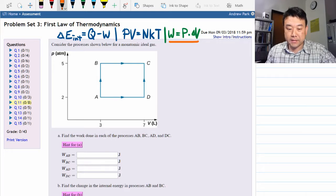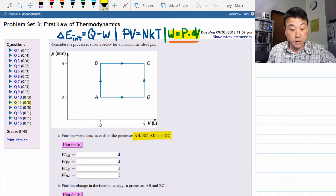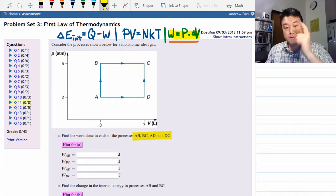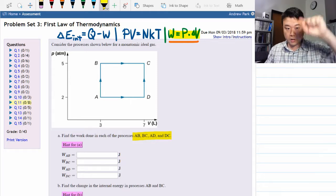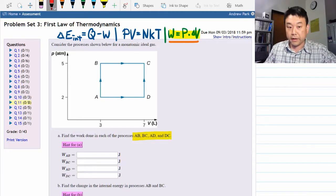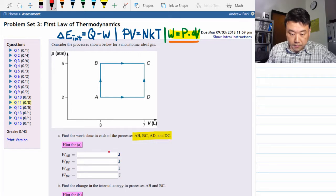So it says find the work done in each of the processes AB, BC, AD and DC. Since this is how work is defined, it's a matter of finding the area under the curve. Two processes, AB and DC, are simple—they're vertical lines so there's no area under the curve, so they both do zero joules of work.